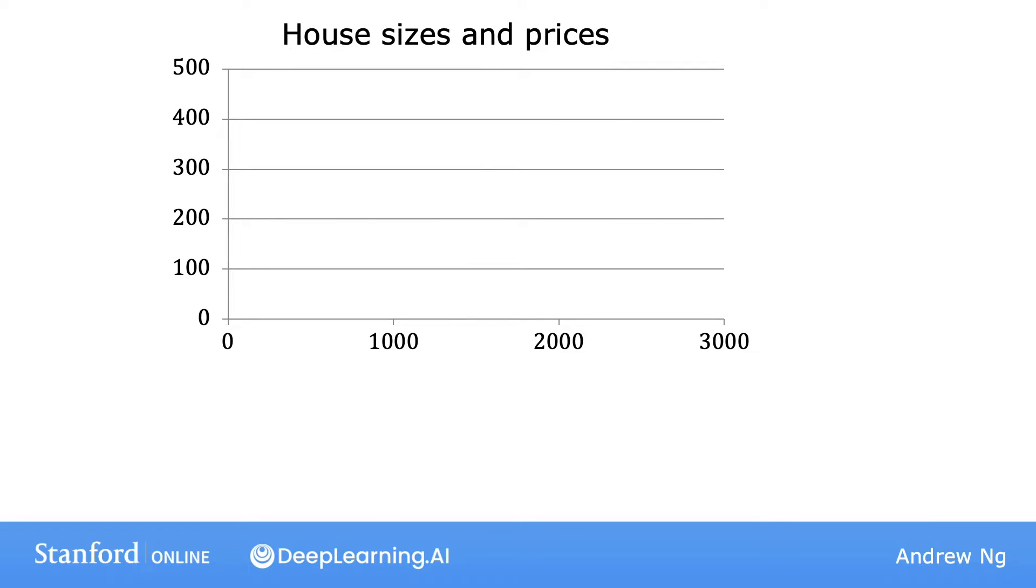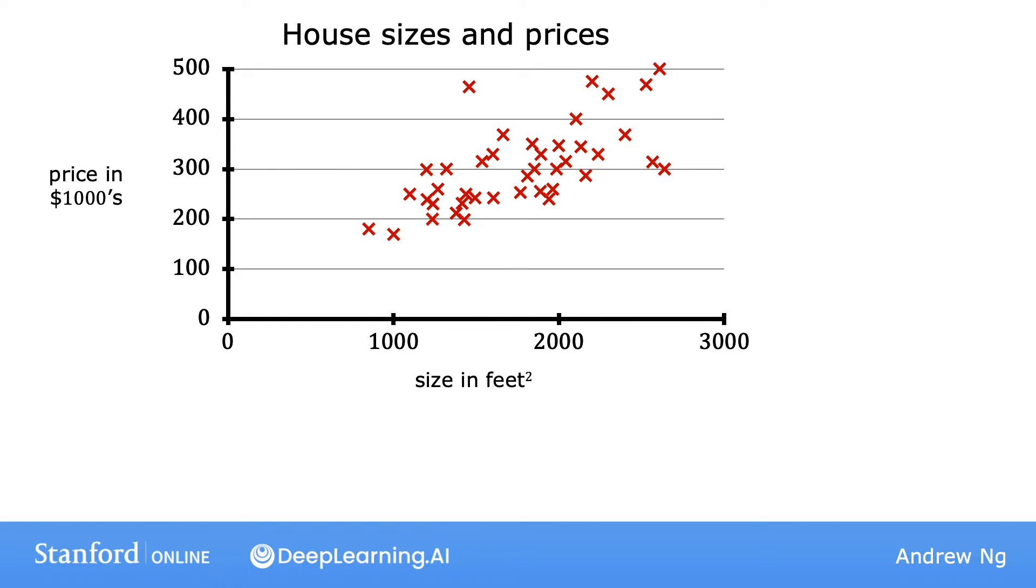Let's start with a problem that you can address using linear regression. Say you want to predict the price of a house based on the size of a house. This is the example we've seen earlier this week. We're going to use a dataset on house sizes and prices from Portland, a city in the United States. Here we have a graph where the horizontal axis is the size of the house in square feet, and the vertical axis is the price of a house in thousands of dollars. Let's go ahead and plot the data points for various houses in the dataset. Here at each data point, each of these little crosses is a house with a size and a price that it most recently was sold for.